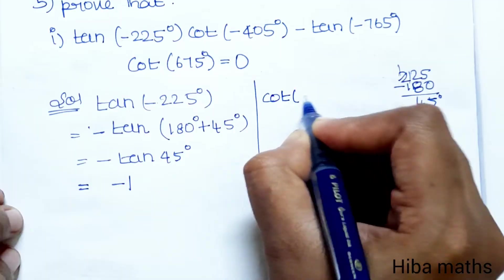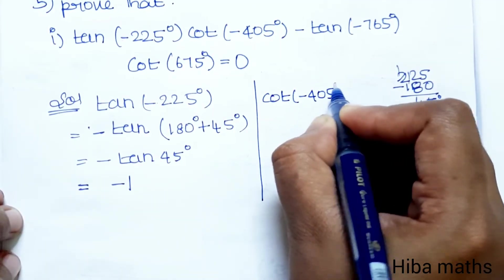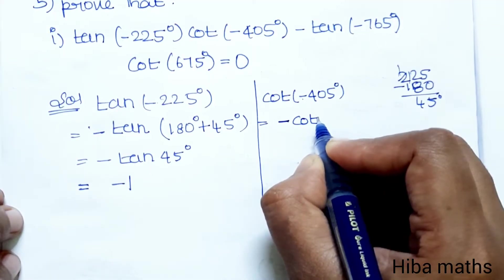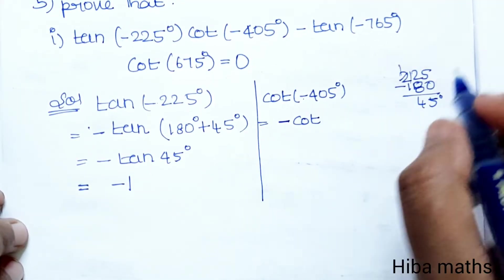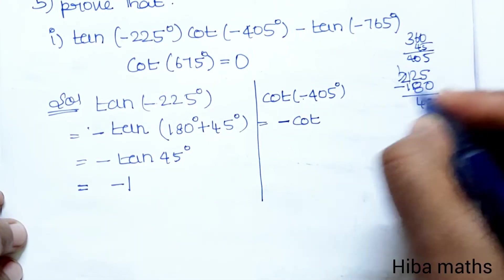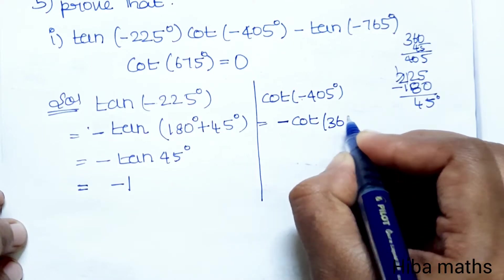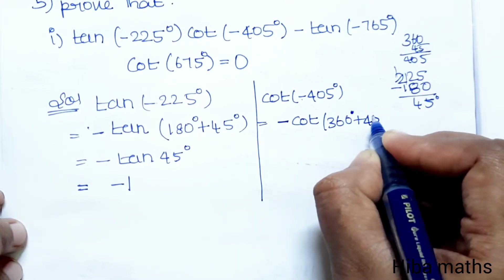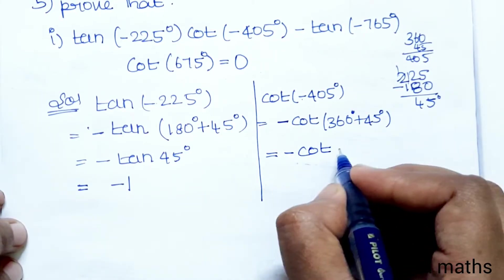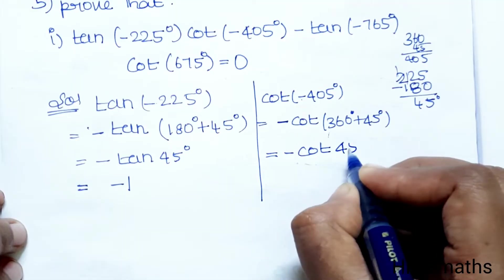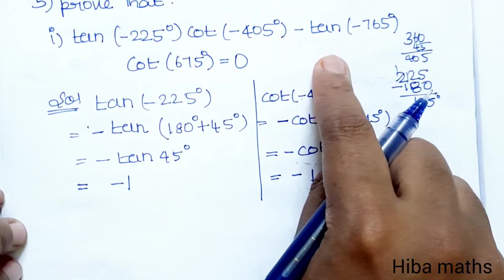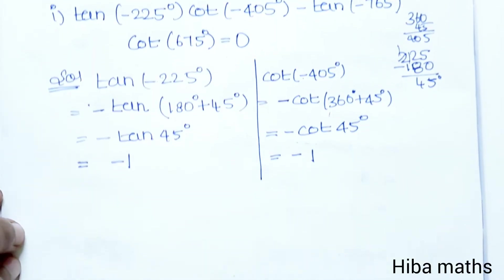Next, solve cot(-405°). Since cot is an odd function, cot(-405°) = -cot(405°). Now 405° = 360° + 45°, so cot(360° + 45°) = cot(45°) = 1. Therefore cot(-405°) = -1.